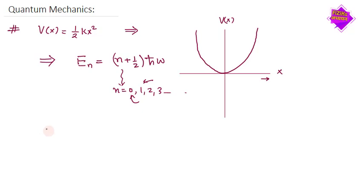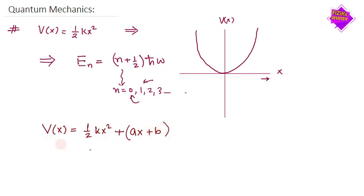Now, what happens if I change this potential ½kx² by adding some lower-order terms — let's say Ax + B? This will be the concern of this particular video: how to get the energy eigenvalues for this type of potential, which is harmonic but has a slightly different form. Let's get started on how to solve this problem.